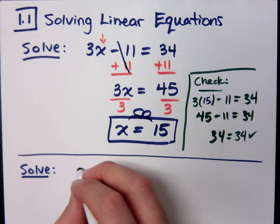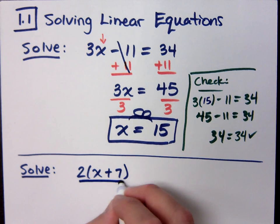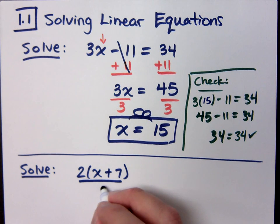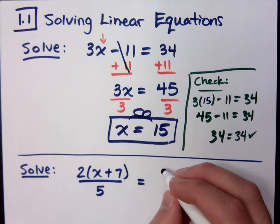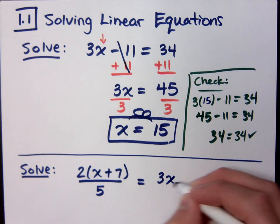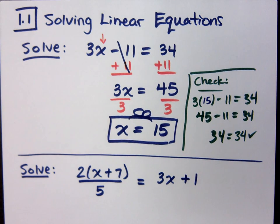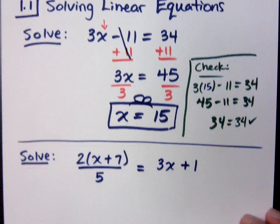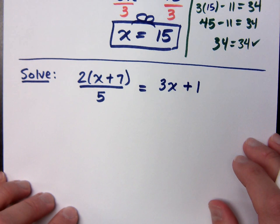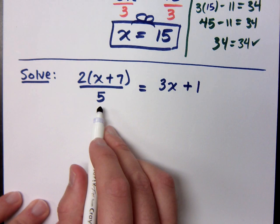I'm going to do this guy. 2 times x plus 7 all over 5 is equal to 3x plus 1. How would you solve this equation? Let's get rid of this nasty fraction right here, the 5. The 5's in the way.